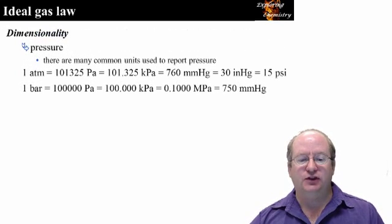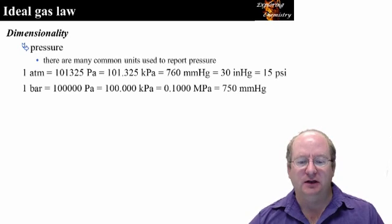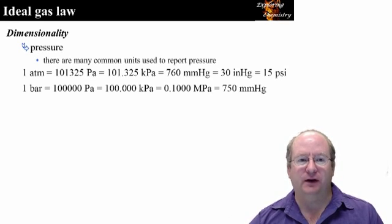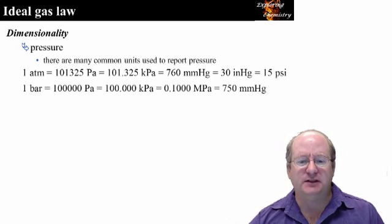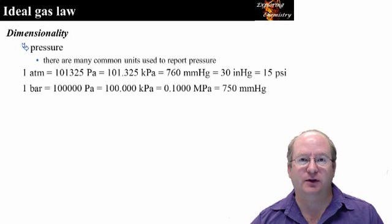Now let's look at each of the terms in the ideal gas law. For pressure, there are many units commonly used. The SI unit of pressure is the Pascal, but because the Pascal is a very small unit, pressures are commonly reported in kilopascals. The average atmospheric pressure at sea level is one atmosphere, or 101.325 kilopascals. The metric system is founded on factors of 10 — one atmosphere is very close to 10 to the 5 pascals, and the unit of bar is equal to 10 to the 5 pascals. In addition, megapascals, millimeters of mercury, inches of mercury, and pounds per square inch or psi are common units of pressure.